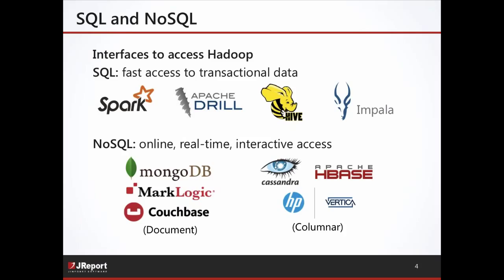On the NoSQL side, if your data is non-transactional semi-structured data, NoSQL is a great way for online, real-time, interactive access. There are many NoSQL databases — MongoDB, MarkLogic, and Couchbase are top document-based NoSQL types. There are actually many different types of NoSQL databases: document-based, column-based, graph-based, and key-value pair-based. Document and column are the more popular ones.